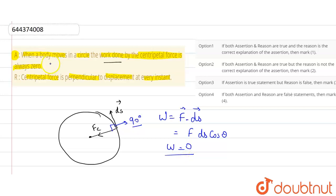So we can say that when a body moves in a circle, the work done by centripetal force is always zero. So the assertion is correct. The centripetal force is perpendicular to displacement at every instant.